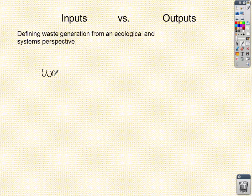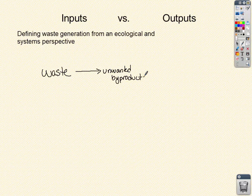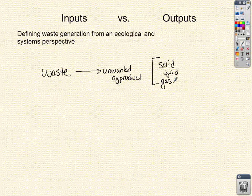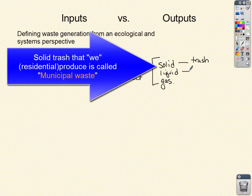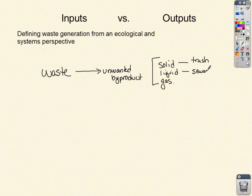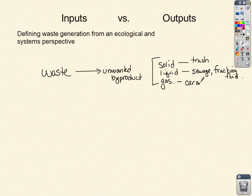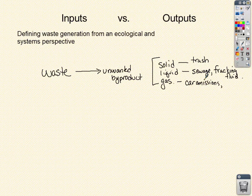Waste comes in many shapes and sizes — any unwanted byproduct. It can be a solid, a liquid, or a gas. Solid waste is the trash we produce as a society. Liquid waste includes things like sewage, toxic fluids, or fracking fluid that is no longer useful. Gas waste includes things like car emissions or emissions from a smokestack. Any unwanted byproduct is waste and must be disposed of.